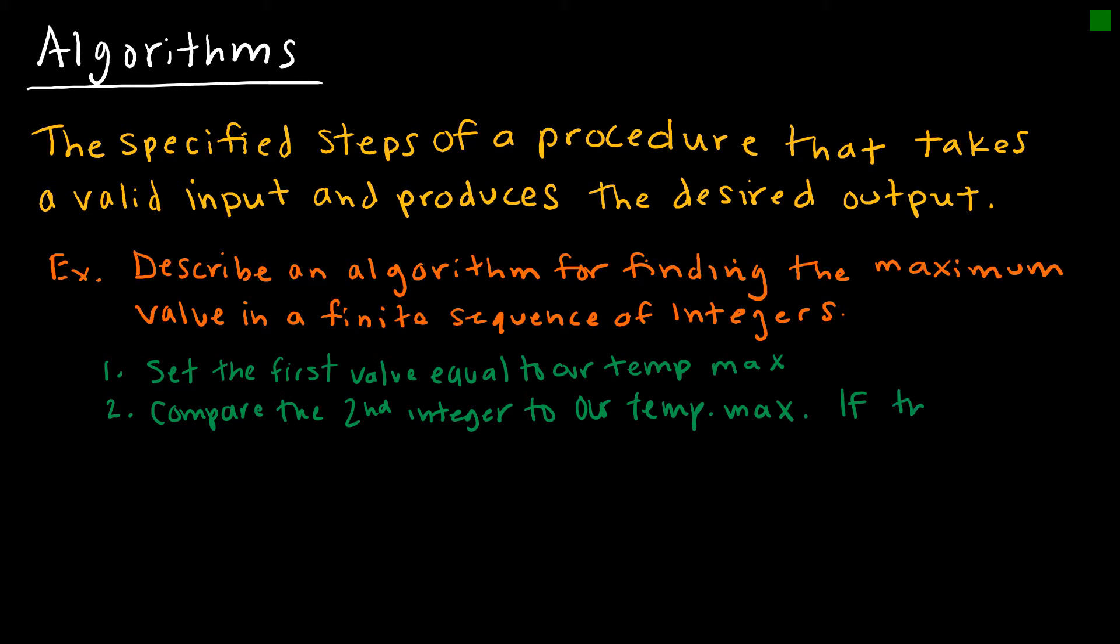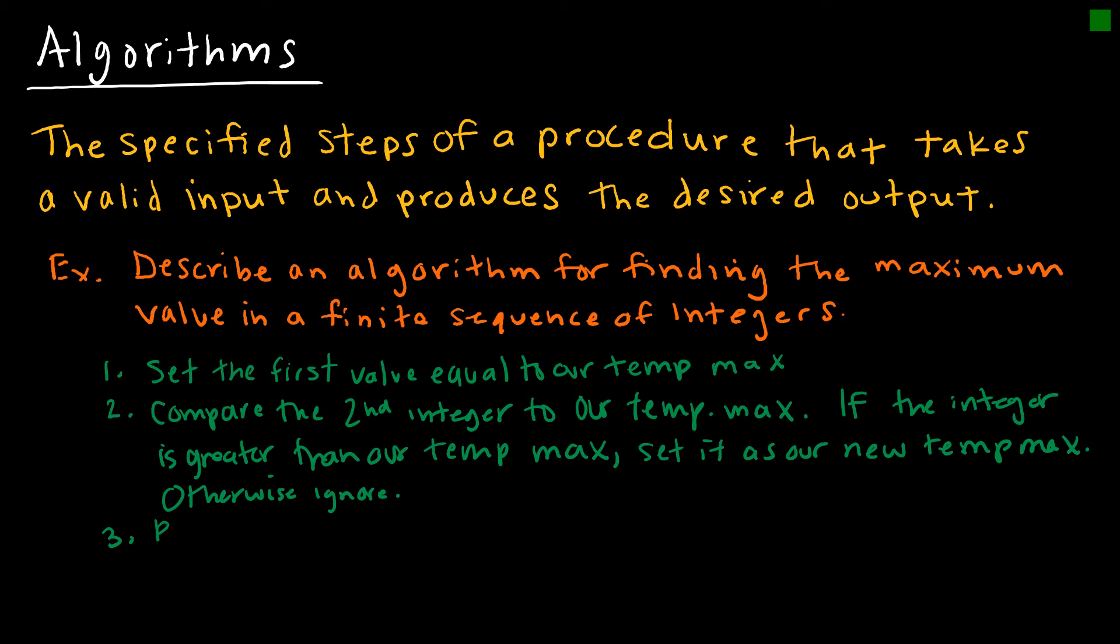If the integer is greater than our temporary max, what are we going to do? We're going to set it as our new temporary max. So what's going to happen if it's not greater? Otherwise ignore. Essentially, we're just going to repeat these steps until no more integers exist.